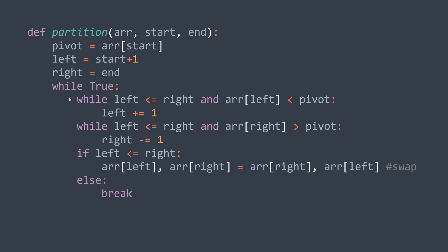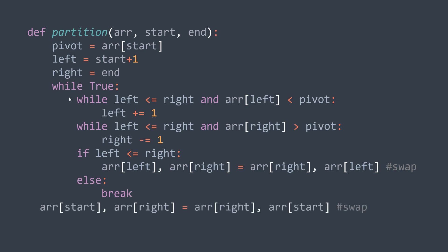After the loop stops, we need to take the pivot to its correct position so that smaller elements are on its left and greater elements are on its right. Its corresponding position is now the index right. This is why we swap our start — which is the pivot, since we chose the first element — with the element at index right. We also return the position of the pivot from the partition function.